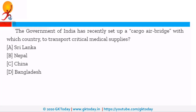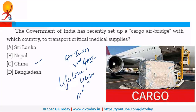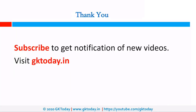The government of India has recently set up a cargo air bridge with which country to transport critical medical supplies? The right answer is China. This air bridge uses regular cargo flights for transporting critical medical supplies between India and China, operated by Air India from 3rd April, and is to be implemented under the Lifeline Udan initiative of the Ministry of Civil Aviation. Those were the important questions — thank you, and that's all for the day.